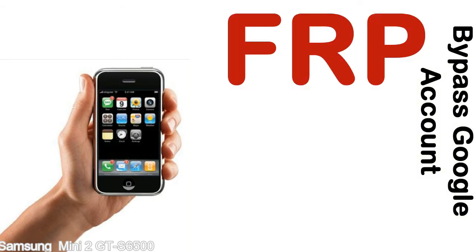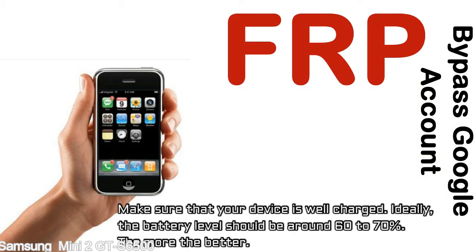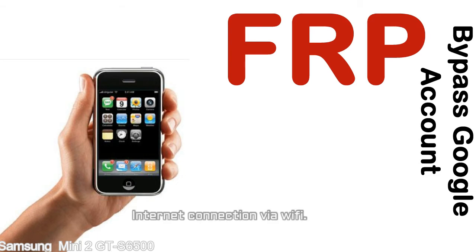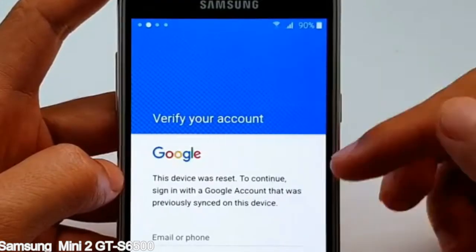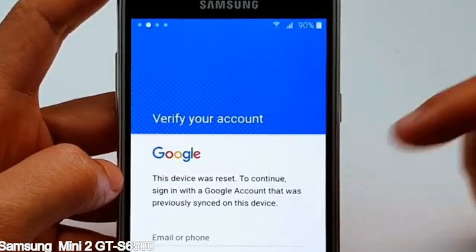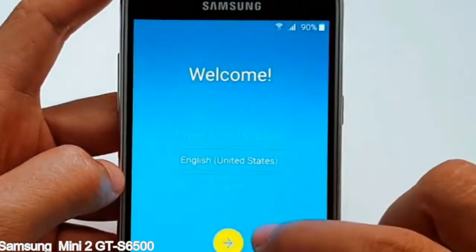Before starting: first, make sure that your device is well charged. Ideally, the battery level should be around 60 to 70% — the more the better. Second, internet connection via Wi-Fi. Here is a step-by-step guide on how to bypass Google account on your Samsung Galaxy device.